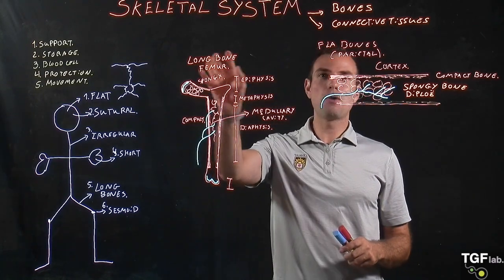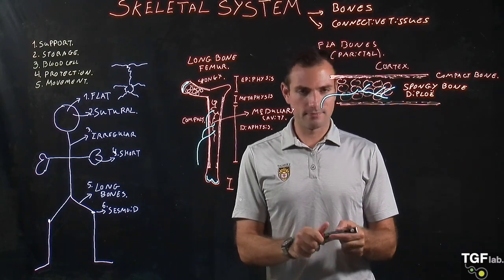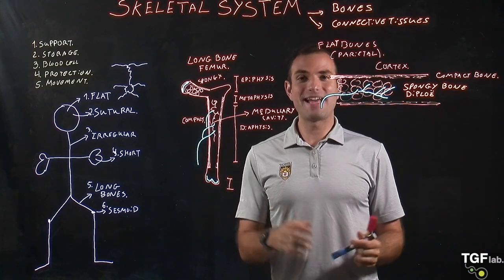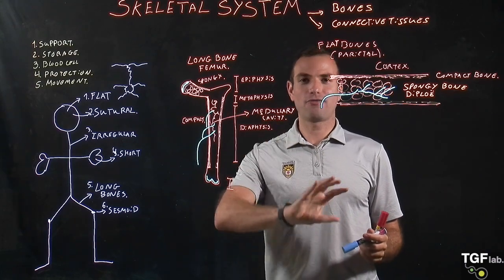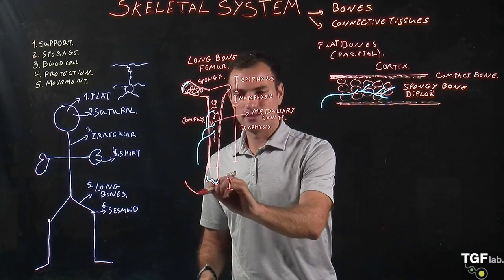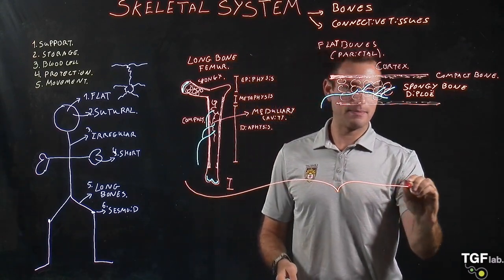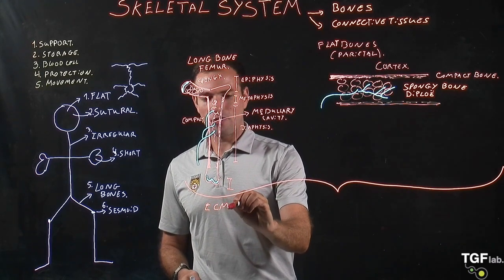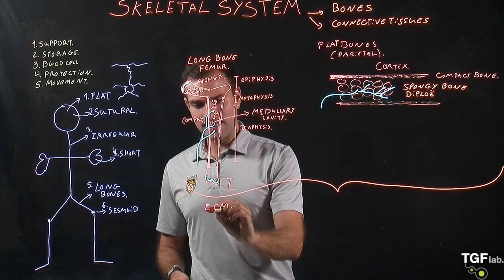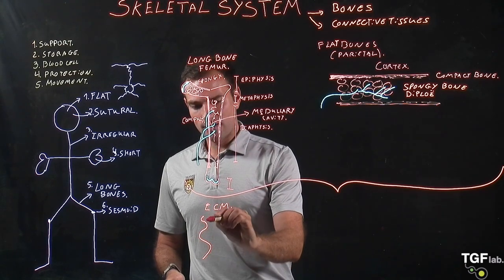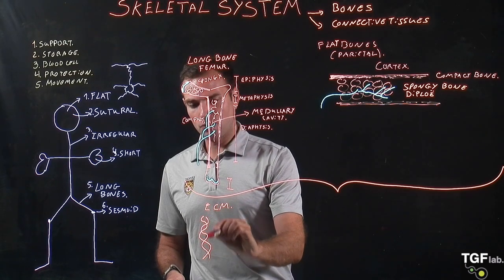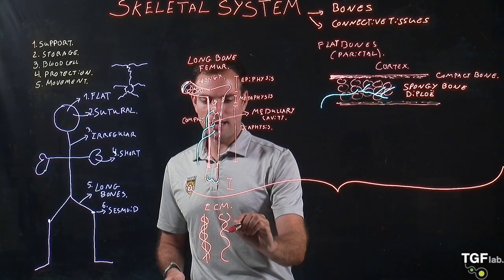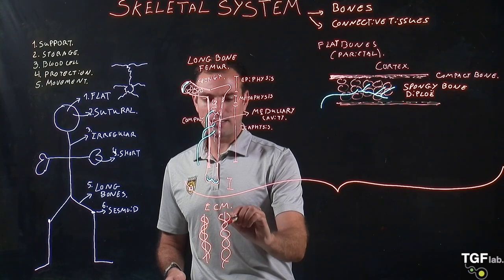So as we have seen, the long bones and the flat bones have a very different structure, but they also have a lot of similarities. Looking at the similarities, there are two main ones. The first is the composition of the ECM. In the ECM of both bone types, we have a connective tissue or fibrous tissue part made out of collagen — specifically collagen type one.